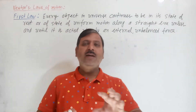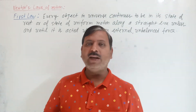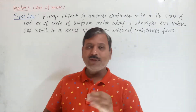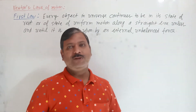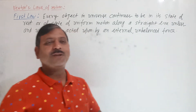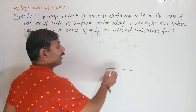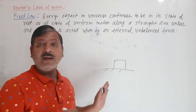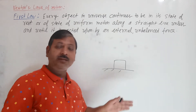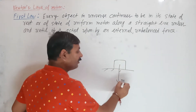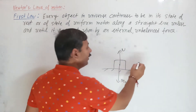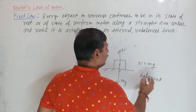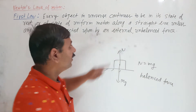For example, if you have kept one ball here, the next day you will come and see that the object will still be there. That is because no external unbalanced force is acting. Its weight mg acts downward, normal reaction acts upward, and normal reaction is equal to weight — so balanced force is acting, not unbalanced force.